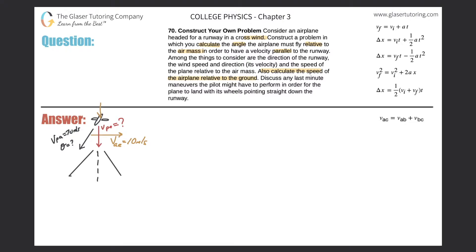The plane can't point its nose parallel to the runway — it has to point it at a slight angle to account for this crosswind. So the velocity of the plane relative to the air is going to be 70 meters per second at some angle relative to the crosswind. The resultant vector is what we want: the plane moving parallel to the runway so it lands on the runway.